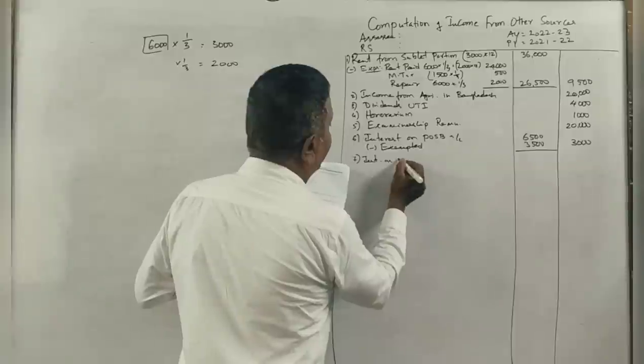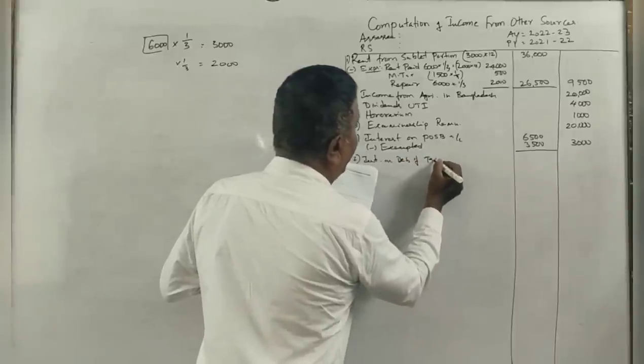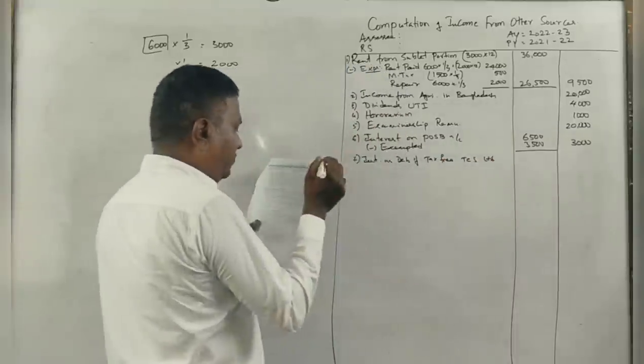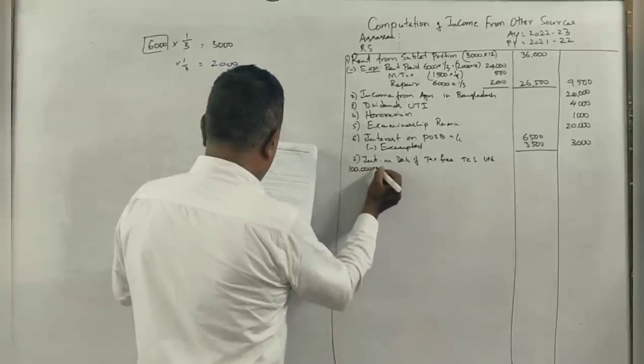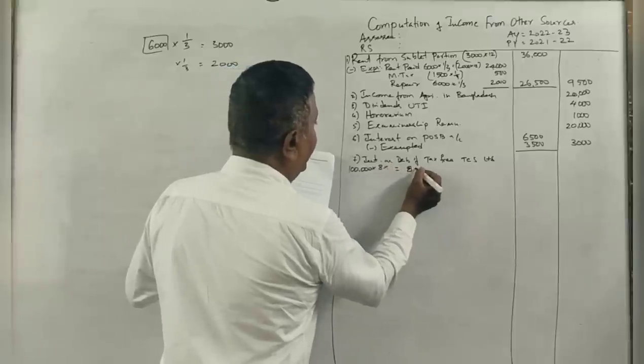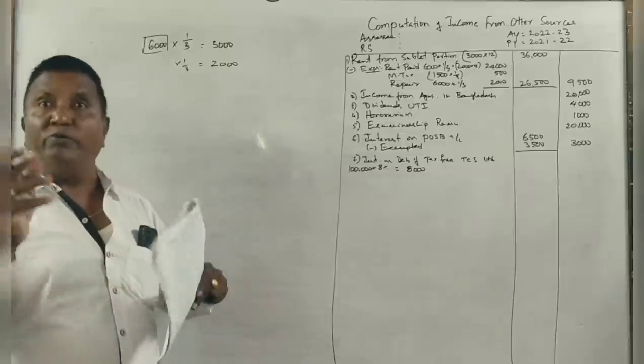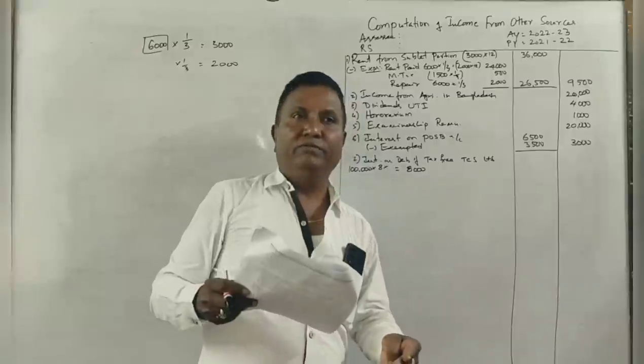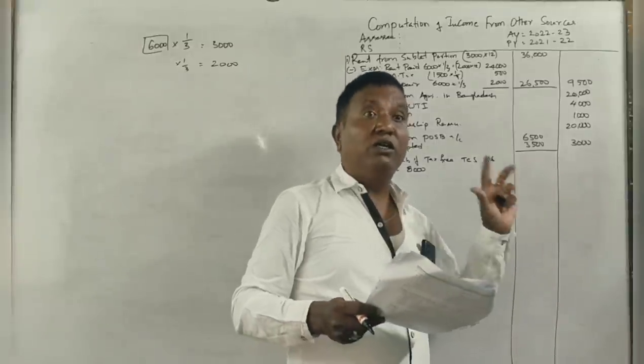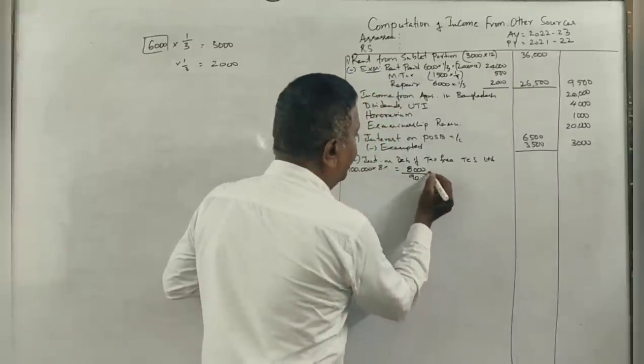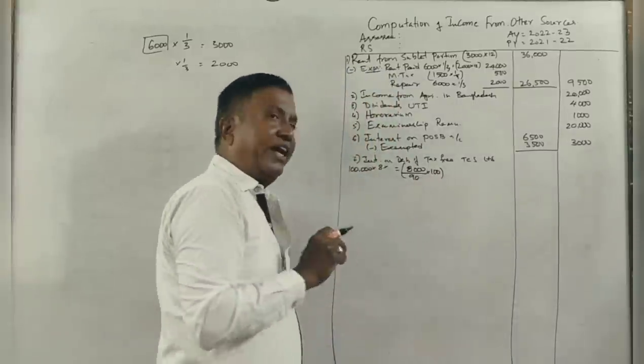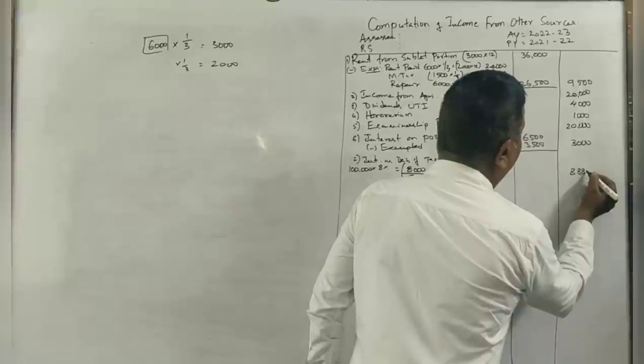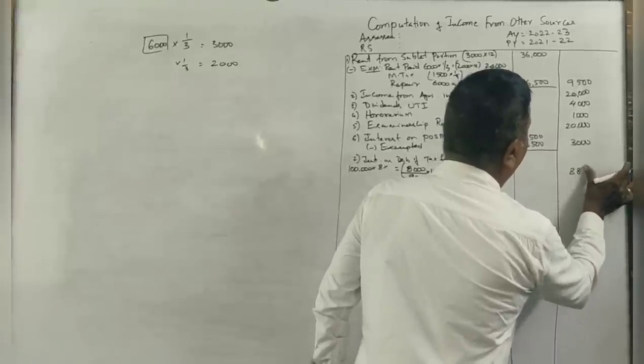Interest on tax-free debentures of TCS company: 1,00,000 at 8% is 8,000. But since it's tax-free, TCS company has already deducted tax and paid you the net amount. You have to show the gross amount, which is 8,000 divided by 90 into 100, equals 8,889. You get 90, they retained 10% tax.